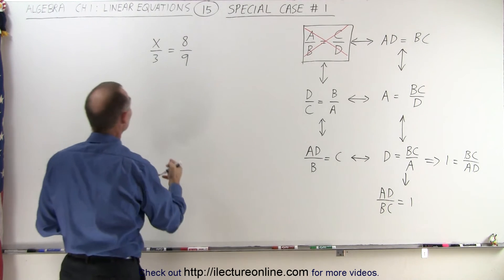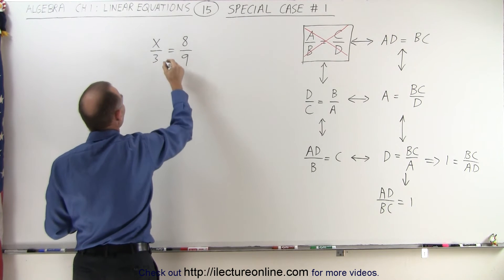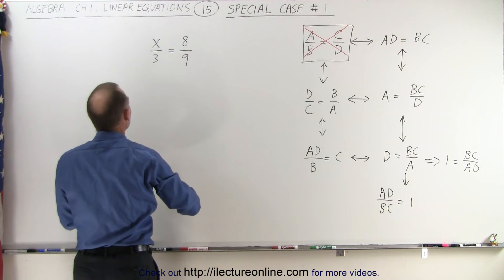So, using that principle, I look at this equation right here, and notice if I want to isolate the X, I move the 3 across the diagonal.